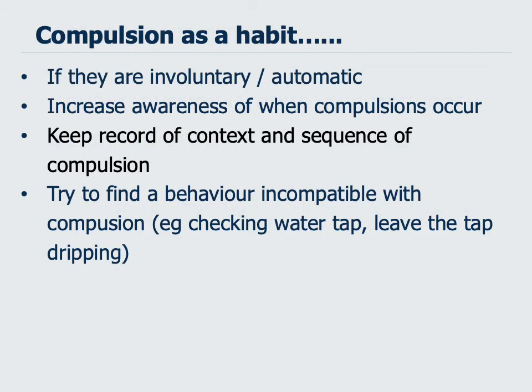Sometimes compulsions are habits, especially when they're very involuntary, automatic, and you're not really aware of when you're doing them. The first step is to increase your awareness of when you do the compulsions — that might involve keeping a record of the context and sequence of events that occur up until when you do the compulsion. In general, you're trying to find a behaviour that's incompatible with the compulsion; for example, if you're checking a water tap, leaving it dripping so that it's pretty pointless to check.